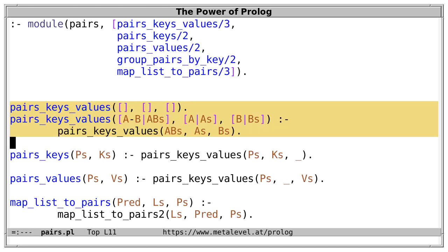If we look at the definition of pairs_keys_values, it's easy to see why this happens, because in the mode in which we are now using this predicate, the first argument is a variable, and so it can't be used to distinguish the clauses.